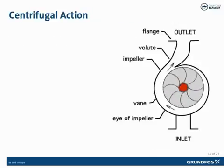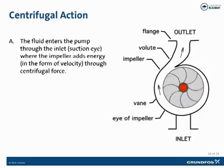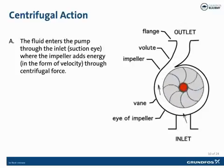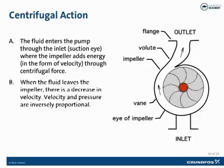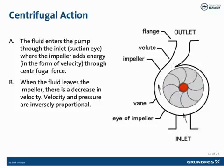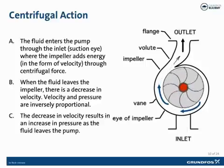This picture explains the operation of the centrifugal pump, showing the volute and the impeller working together. The fluid enters through the inlet of the volute through the eye of the impeller, where the impeller adds energy in the form of velocity through centrifugal force. When the fluid leaves the impeller, there is a decrease in velocity. Velocity and pressure are inversely proportional — as velocity increases, pressure decreases, and as velocity decreases, pressure increases. The decrease in velocity results in an increase in pressure as the fluid then leaves the pump.